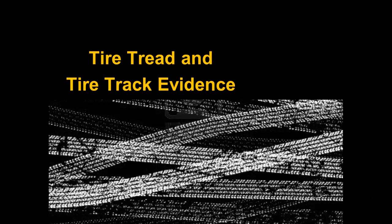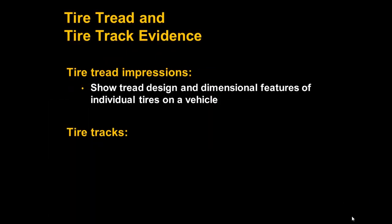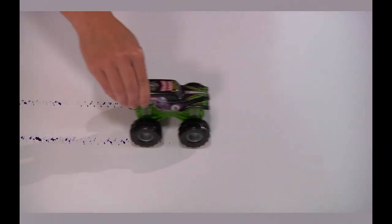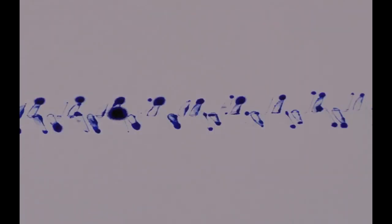Today you will learn about tire tread and tire track evidence. You may be wondering, what's the difference between tire treads and tire tracks? Tire tread evidence deals with the design and dimensions of an individual tire on a vehicle. Tire treads are a form of impression evidence where an object is pressed against a soft surface so that the surface is stamped with the shape and details of the object.